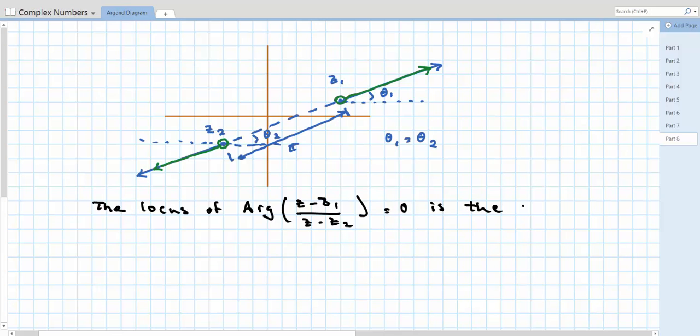the straight line passing through z1 and z2, but